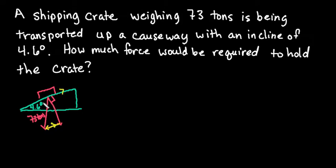So since we have a right angle here and we also have a right angle here, what's going to end up happening is that these are similar triangles. So the 4.6 degrees is going to be the same for this triangle that we just drew.